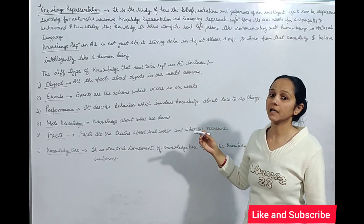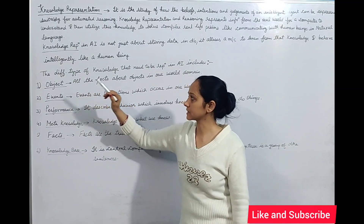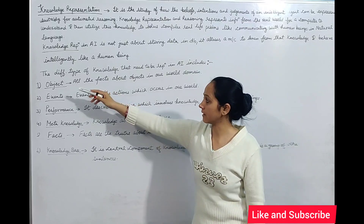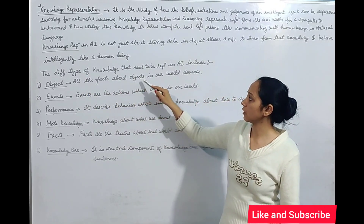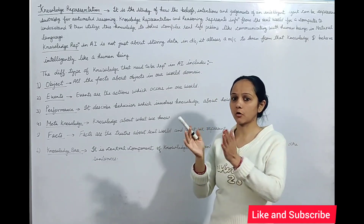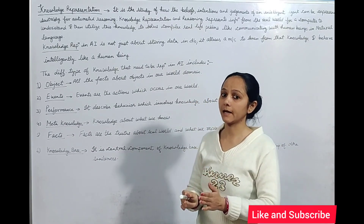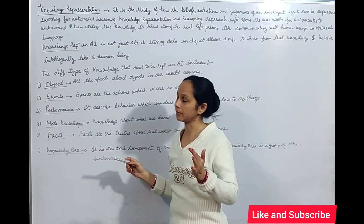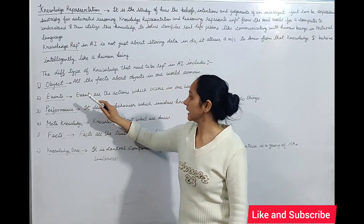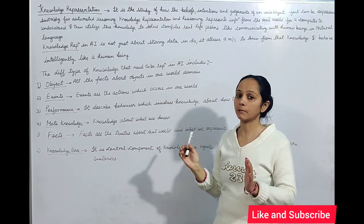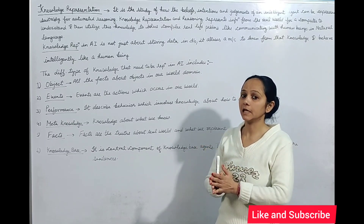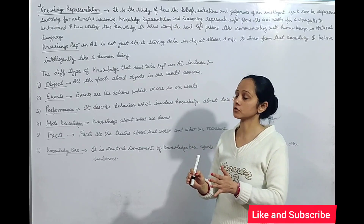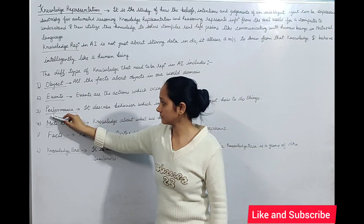What kind of knowledge do we need for an intelligent agent? Objects refer to all the facts about objects in our world domain, including their parts and various relationships. Events are actions that we represent in our world, which an intelligent agent has to work with and discuss.